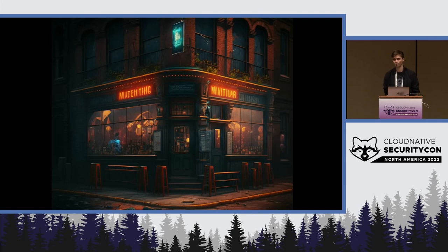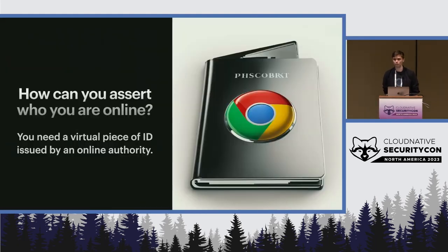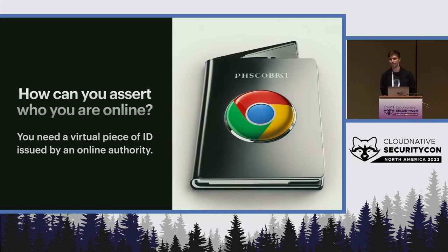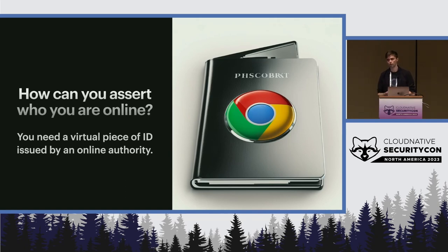This is actually pretty similar to the process of validating a JSON Web Token with an application. So I was able to validate who I was at the bar using my ID, but how am I going to do that online? Obviously I can't scan my passport and send it along to every website — that would be inconvenient and extremely insecure. I need some kind of virtual piece of ID that's issued by a trusted authority. We trust big tech companies like Google or Microsoft, or maybe we have an authentication service that our other microservices can rely on. This is where JSON Web Tokens come in — they're like a digital online piece of identification.